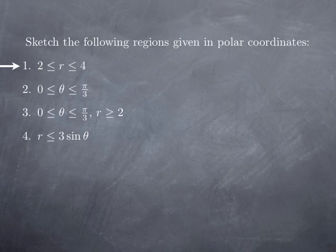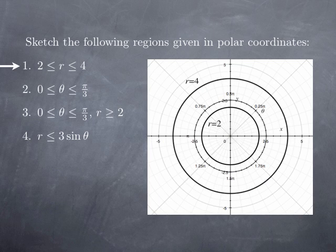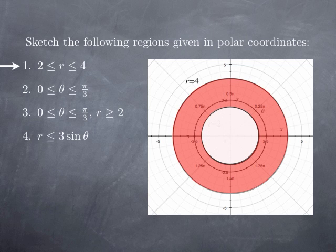Now let's turn to sketching regions given by inequalities in polar coordinates. Starting with the inequality 2≤r≤4: r=2 is the circle centered at the origin of radius 2, and r=4 is the circle of radius 4. The region corresponds to an annulus bounded by these two circles — this is the red region sketched here.